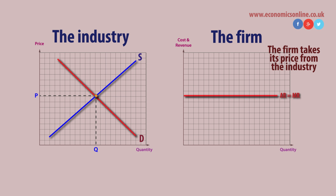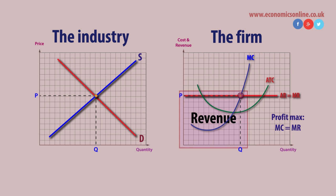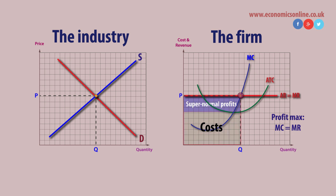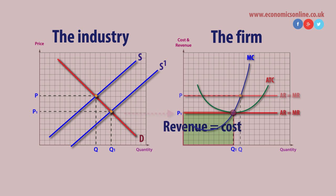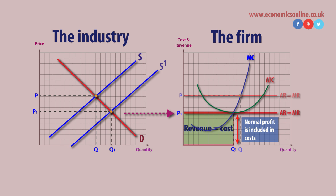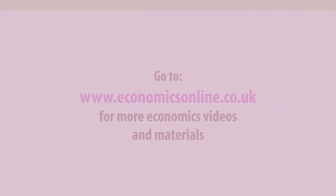Profits are maximized when marginal cost equals marginal revenue. As new firms are attracted into the market, market price falls, and each firm faces a lower price. New firms stop entering only when normal profits are available — when total revenue equals total cost.